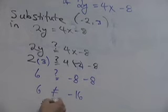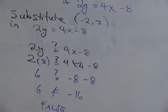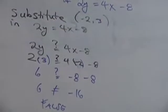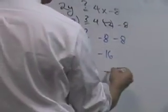Right. So, it's false. Yes. So, what is our answer then? Is... Okay. Is negative 2, 3 a solution of 2y equals 4x minus 8? No, sir. No. Yes. As we say in Russian.